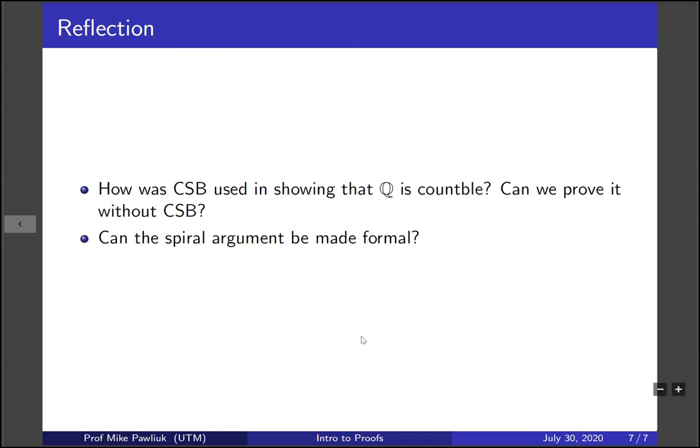All right let's take a moment to reflect: how is the Cantor-Schroeder-Bernstein theorem used in showing that the rationals is a countable set? Can you prove it without using the Cantor-Schroeder-Bernstein theorem? Can the spiral argument be made to a formal proof? Thank you very much and have a great day.